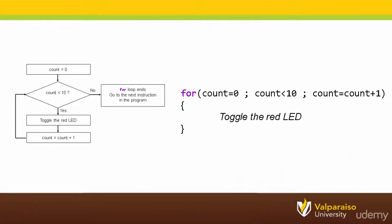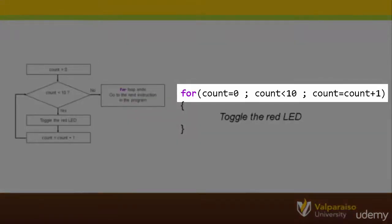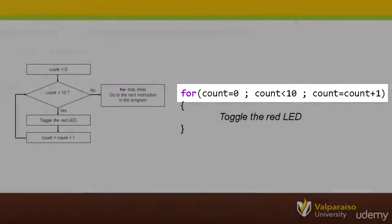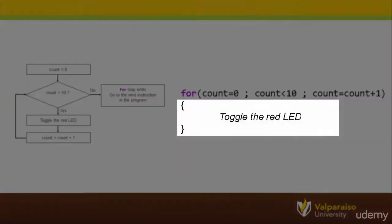Here, we see the for loop instruction that implements our example. Everything that actually initializes and controls the for loop is in the top line. Everything we want the microcontroller to do while the condition is true is enclosed in the curly braces.